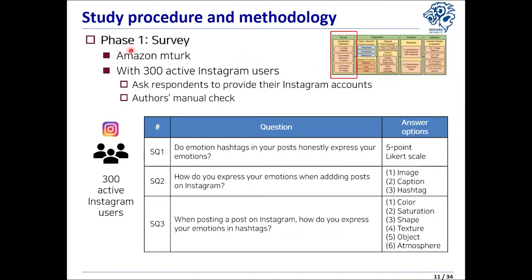In the first phase, we conducted a survey from 300 active Instagram users using Amazon Mechanical Turk. The goal was to confirm the validity of using visual hints for understanding emotions from users' perspective. We had three survey questions: SQ1 verified whether using a hashtag is appropriate for data collection and emotion labeling; SQ2 checked whether people showed their emotions in the image; and SQ3 examined how people's emotions are expressed in the image.